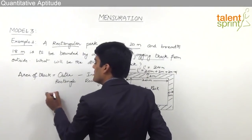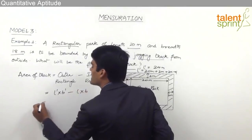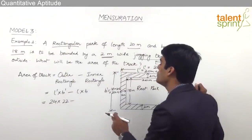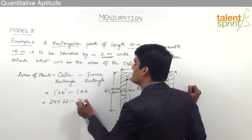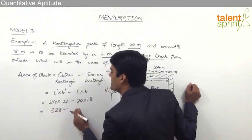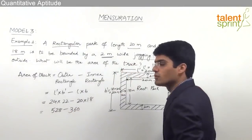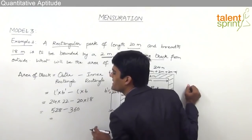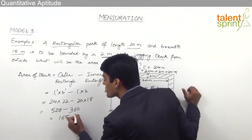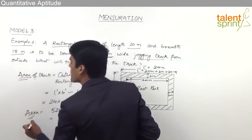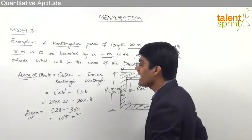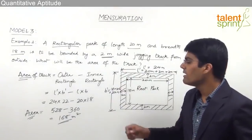The answer is L' × B' minus L × B. L' is 24, B' is 22 for the outer rectangle; L is 20 and B is 18 for the rectangular park. So 24 × 22 = 528, minus 20 × 18 = 360. The difference is 528 - 360 = 168 square meters. The area of the track constructed outside the park is 168 square meters.